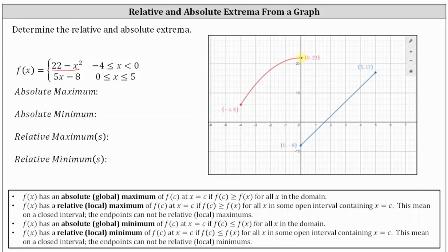And then we have f of x equals 5x minus 8 when x is greater than or equal to 0 and less than or equal to 5, which gives us the blue line segment on the right where both endpoints are closed.